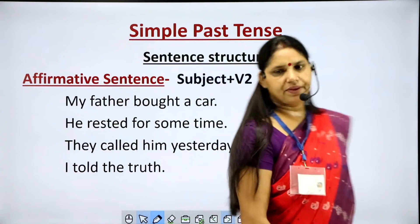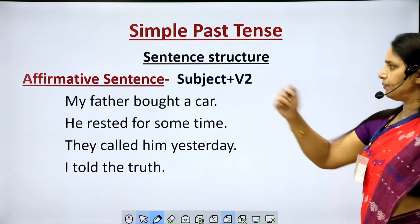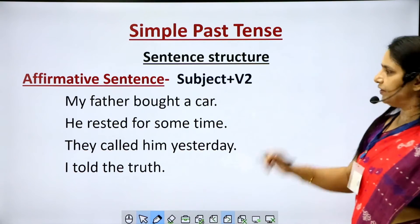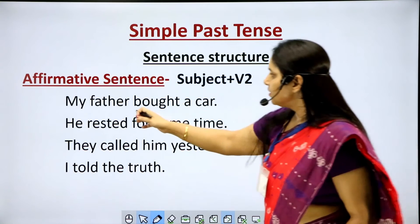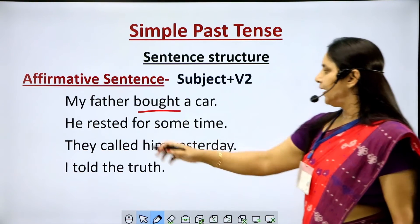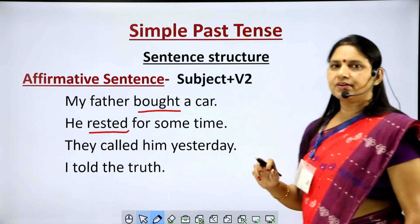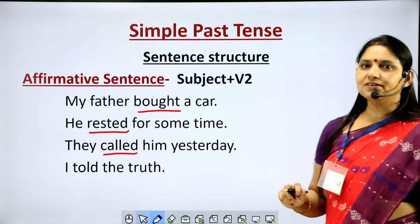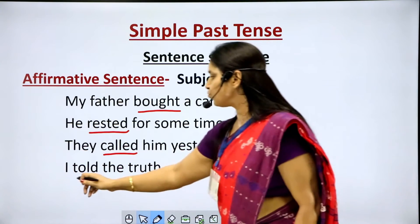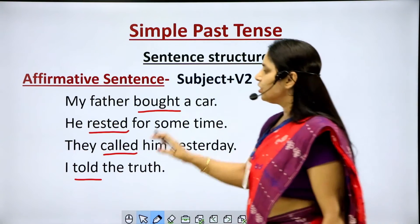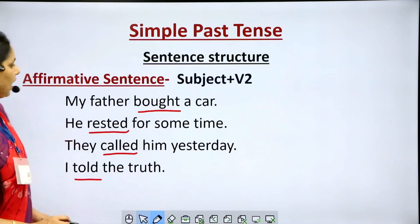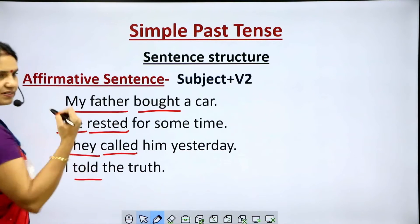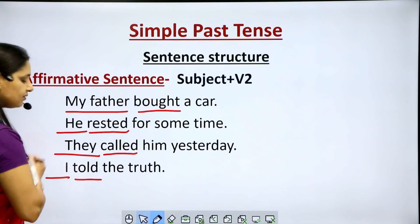Now we come to simple past tense. Affirmative sentence structure: with any kind of subject, the rule is subject plus V2. 'My father bought a car.' — 'bought' is the second form of 'buy'. 'He rested for some time.' — 'rested' is V2. 'They called him yesterday.' — 'called' is V2 of 'call'. 'I told the truth.' — 'told' is V2 of 'tell'. We use V2 with all kinds of subjects regardless of person or number.